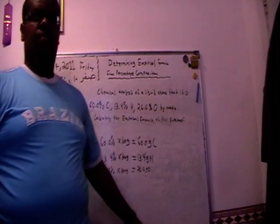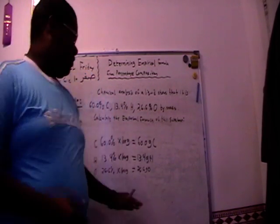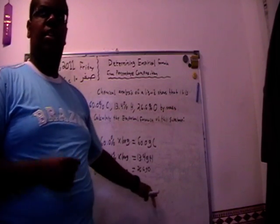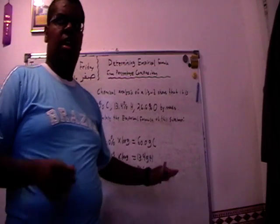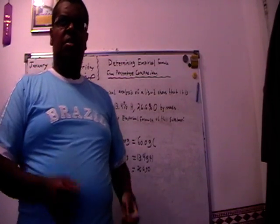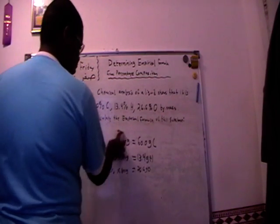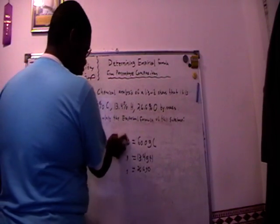Now convert the mass of each element into the amount in moles using the reciprocal of the molar mass. First of all, look at the grams. We erase that so we can have room.